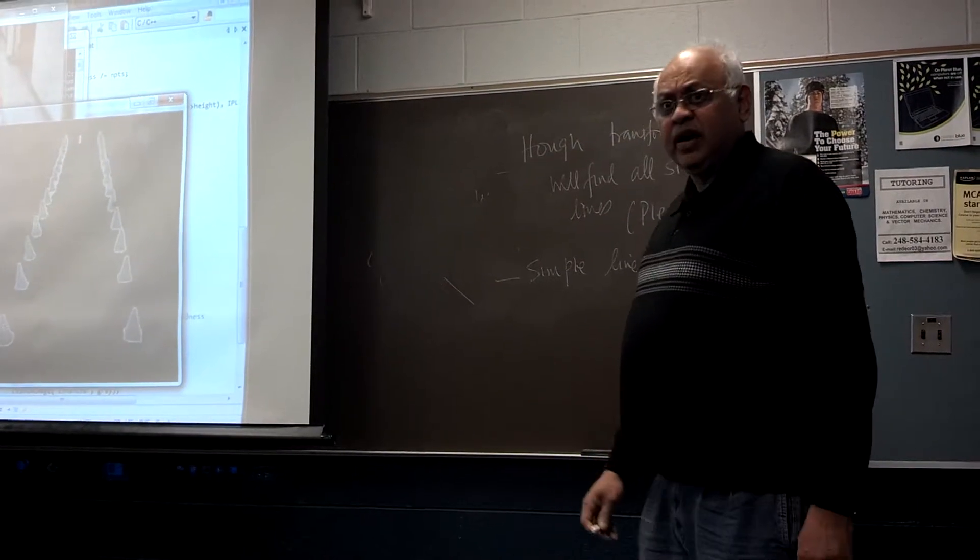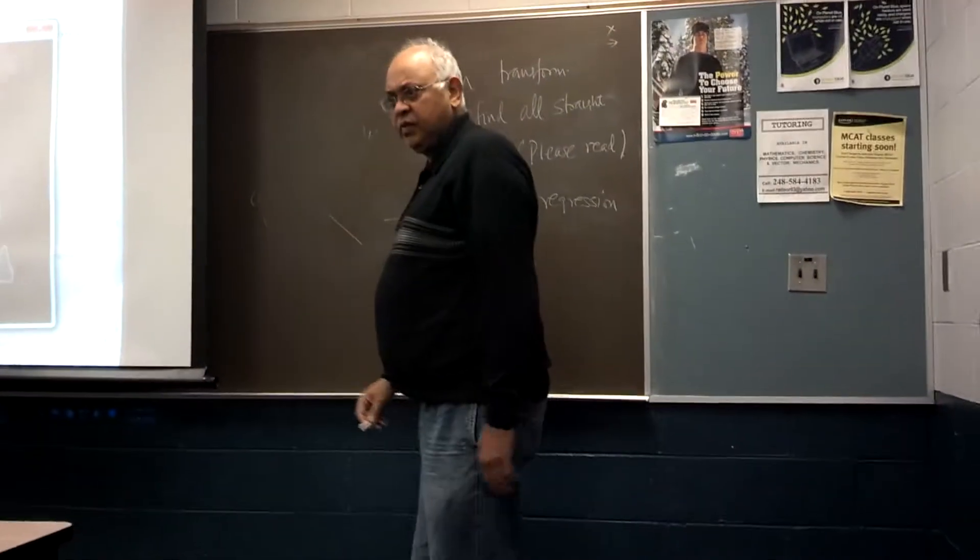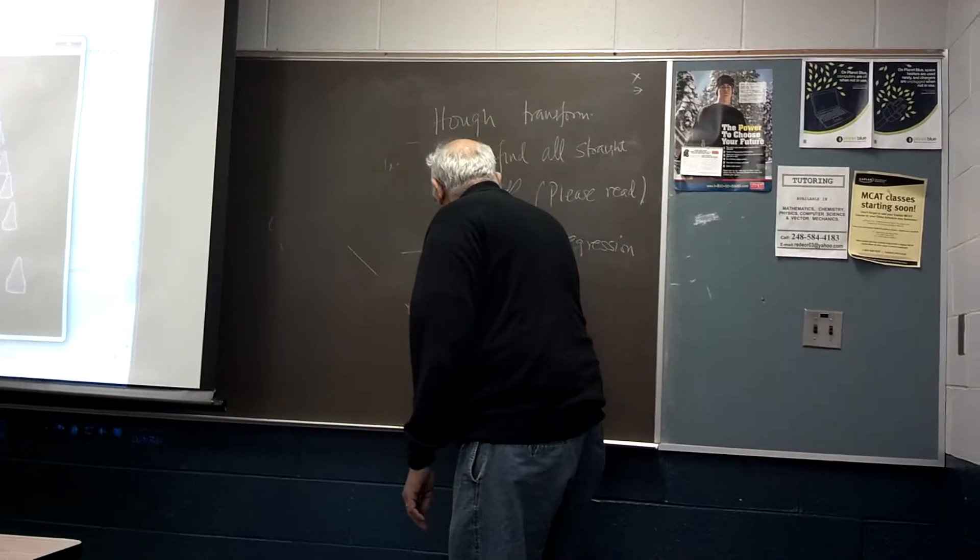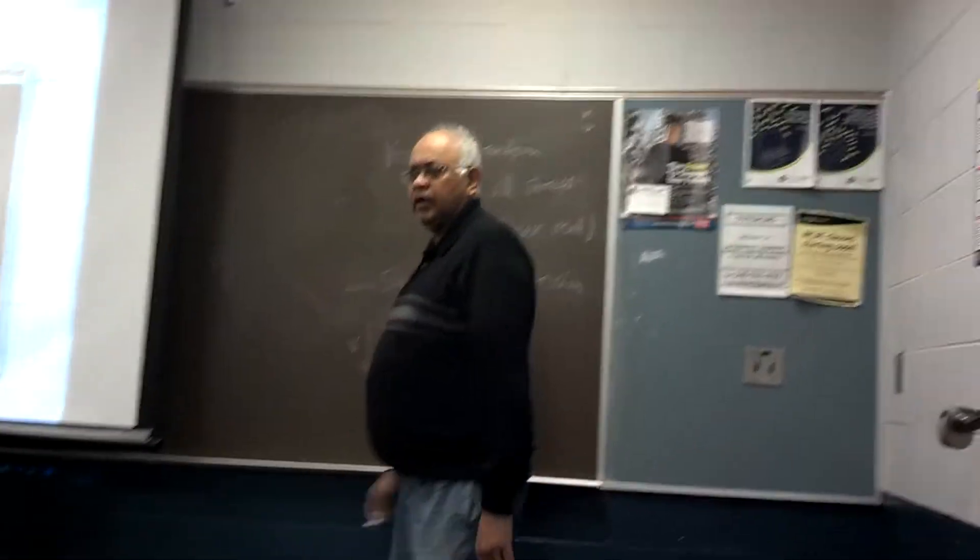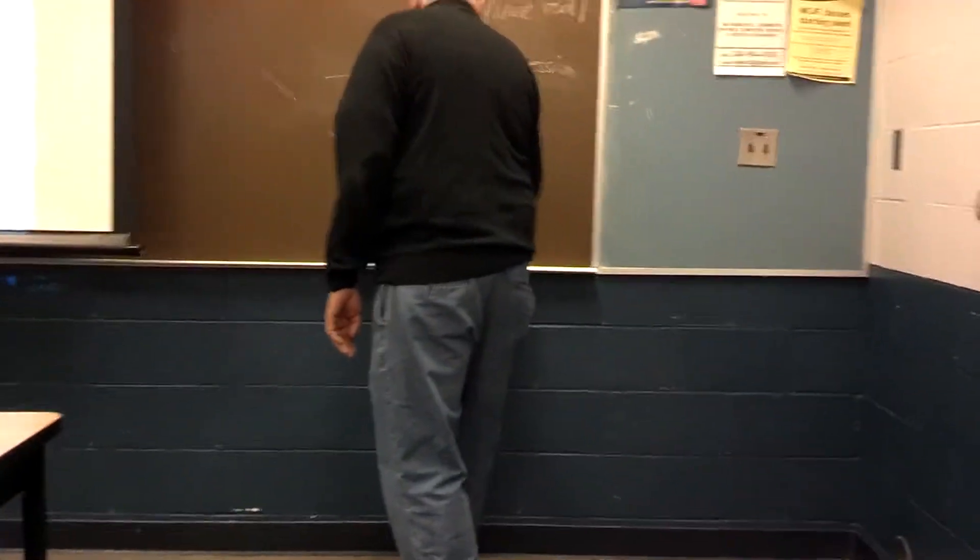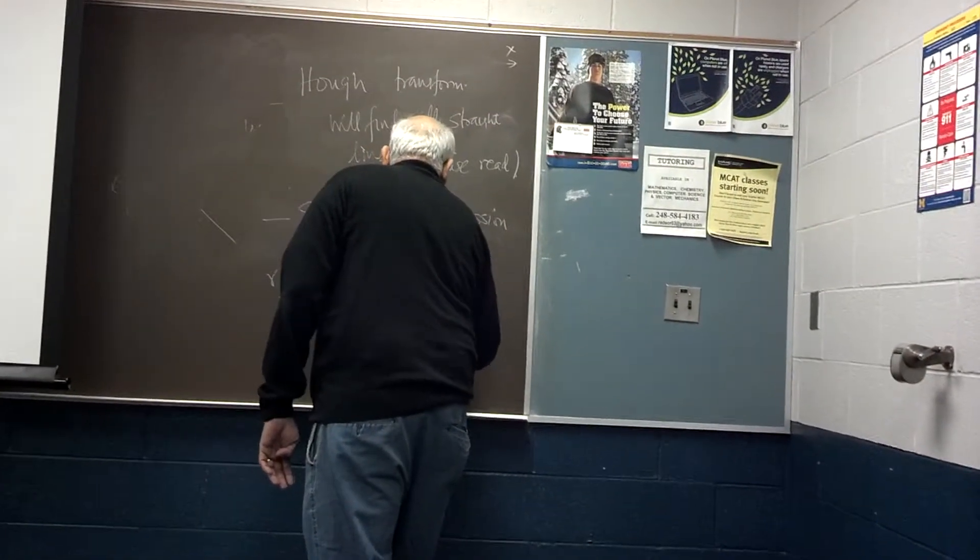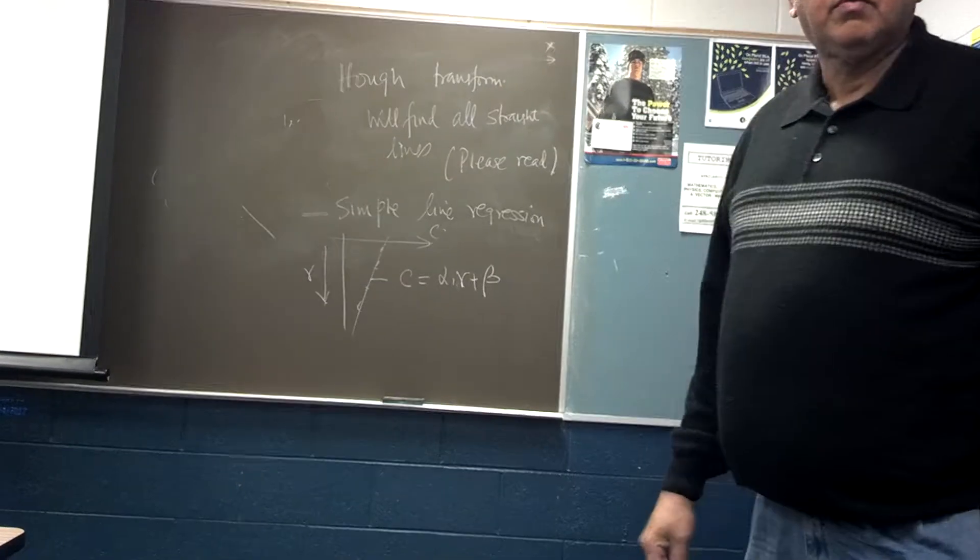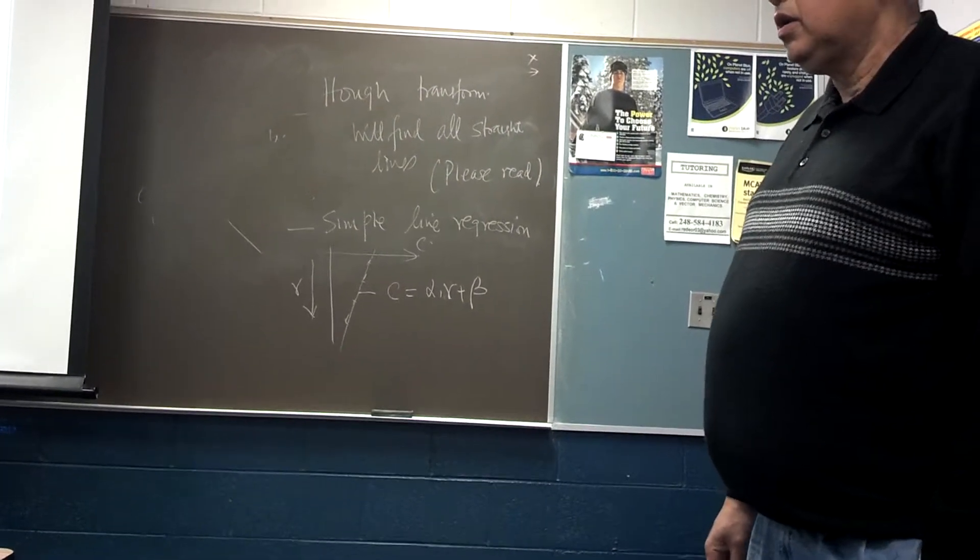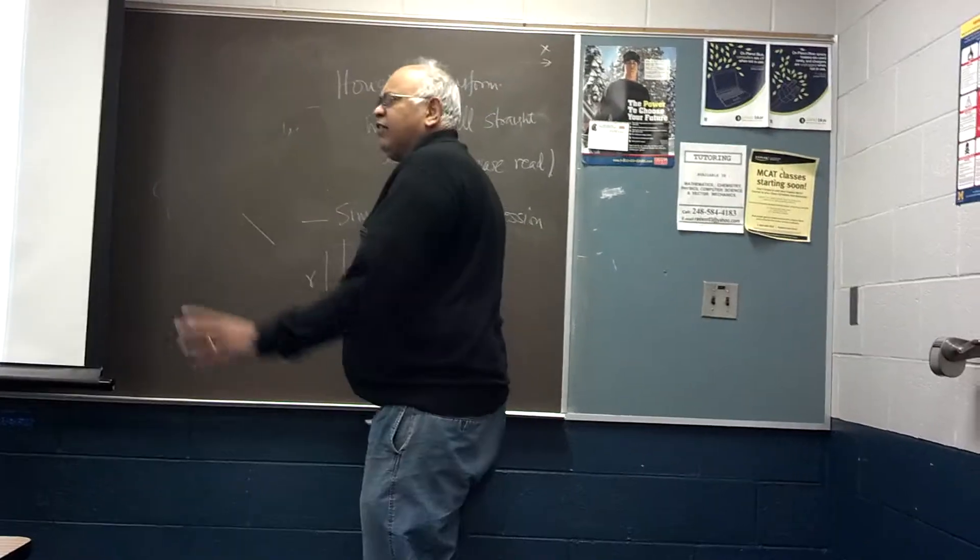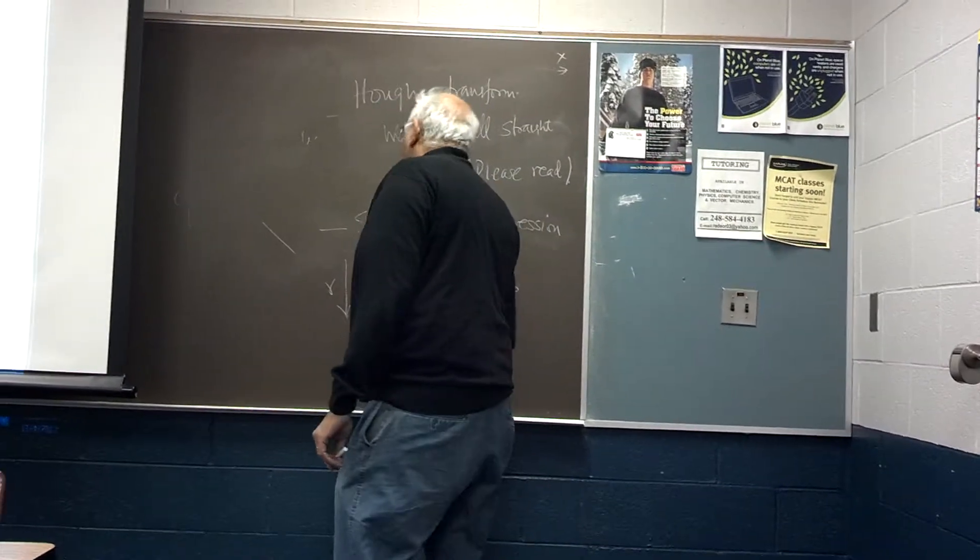I'm going to use a simple right line regression. So this is my column and this is my row. This line I can write as column C equals alpha r plus beta.